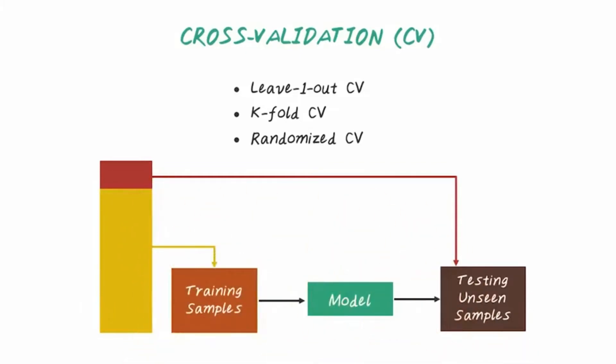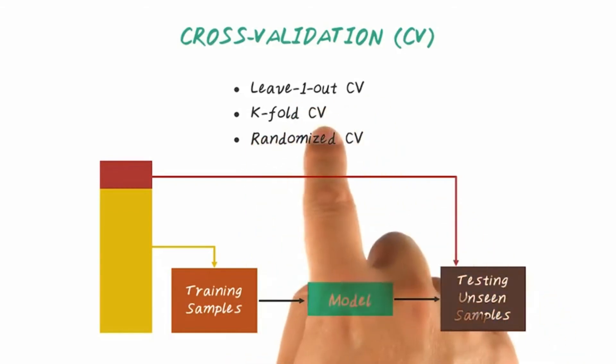Finally, the performance matrices are aggregated across these iterations, often by taking the average. There are three common methods for cross-validation: namely leave-one-out cross-validation, k-fold cross-validation, and randomized cross-validation.